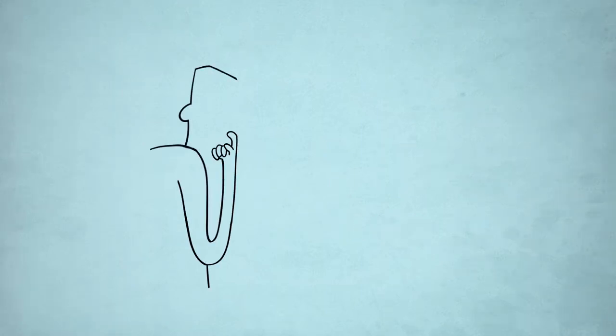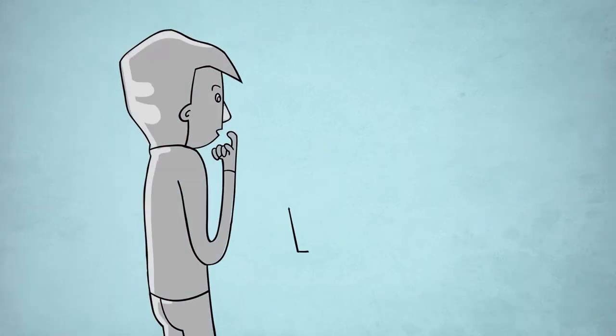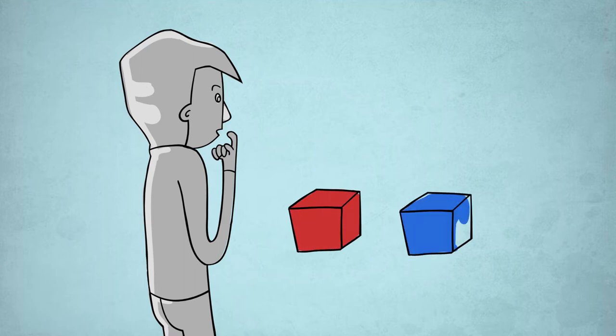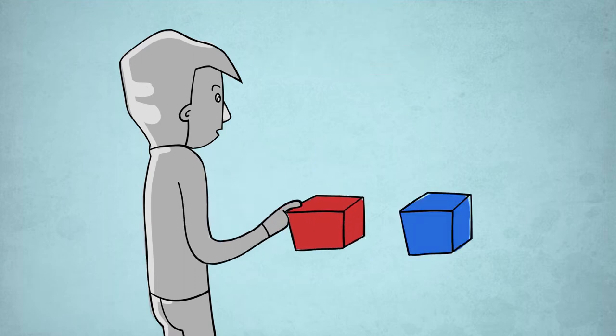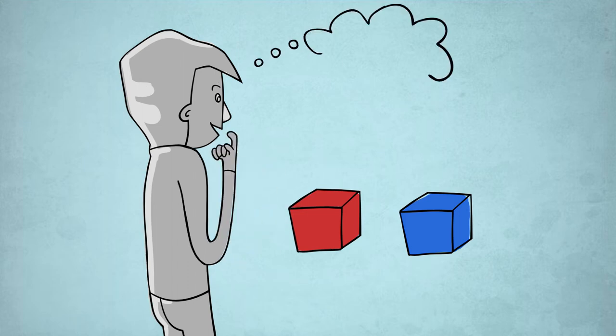Learning happens when reality doesn't match our expectations. If, after we make a decision, something good and unexpected happens, our expectations will change in order to favor that same decision in the future.